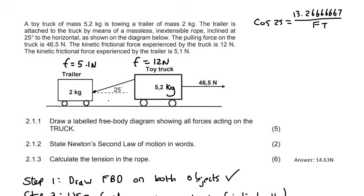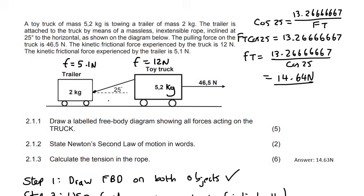Then to get FT alone, you would first multiply it across. So it'll be FT cos 25 equals to 13.2666667. And then you divide by cos 25. There we go. And if I do this, I'm getting 14.64 now. Whereas on the memo, they had 14.63. But I mean, that's just a rounding thing. You're not going to be penalized for that. So yep, that's how you would do it.